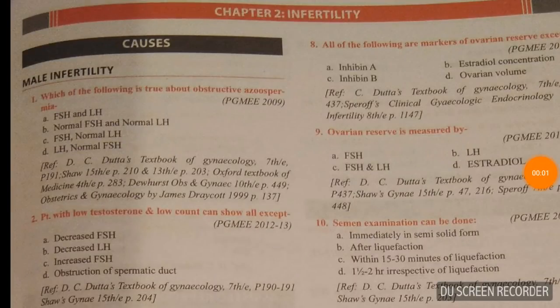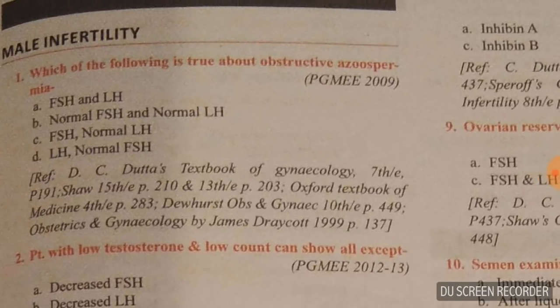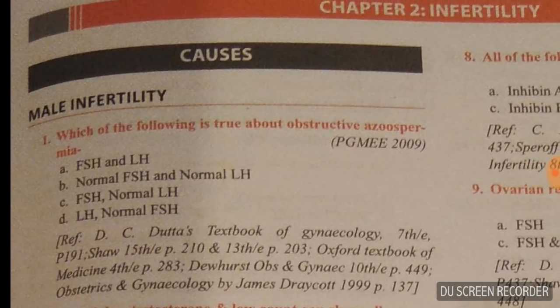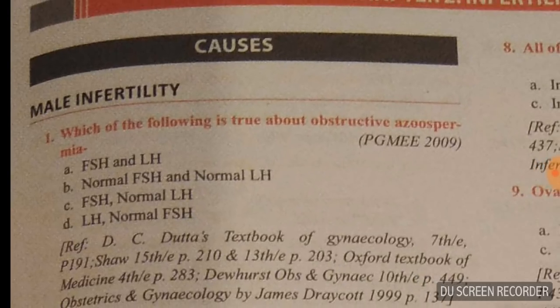Good evening doctors, today we are going to discuss infertility. Question number one: which of the following is true about obstructive azoospermia? They are asking about FSH and LH. The answer is B — normal FSH, abnormal LH.